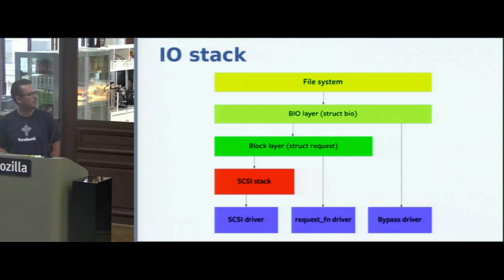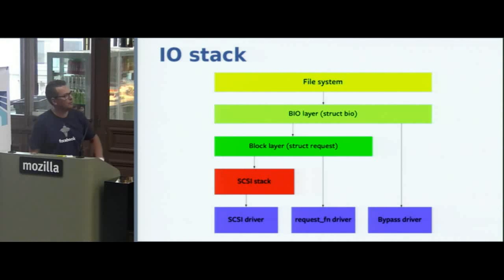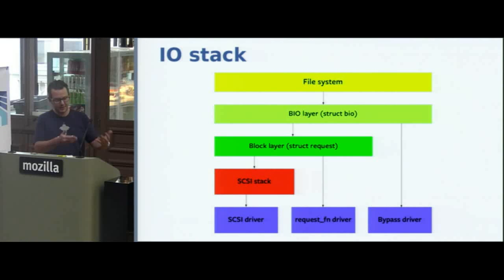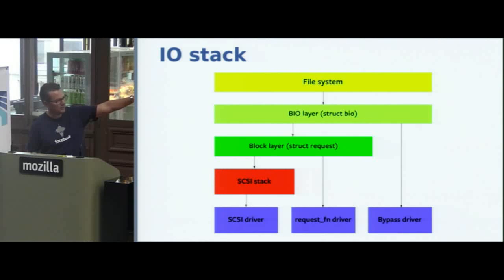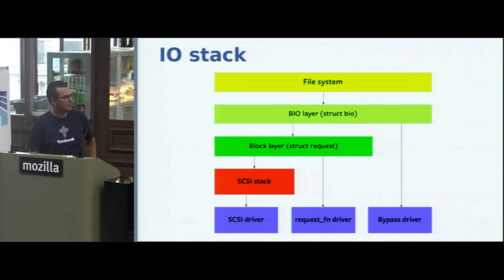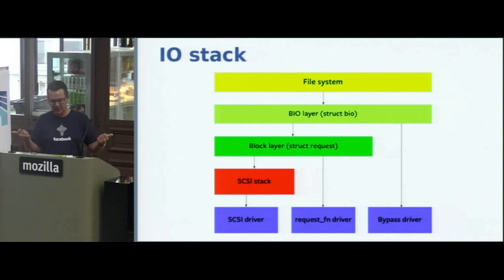Here's a general overview of what the IO stack looks like. Bypassing VFS and page cache, we focus on the bottom layer. Once you get to the file system, it constructs a BIO unit — the main unit of IO. Once we get into the block layer, we set up a struct request and pass it down to the driver. That will go through the SCSI stack and down to the SCSI driver, or to a request-based driver. There's also a bypass mode driver which bypasses the entire block stack, originally invented for things like RAID.